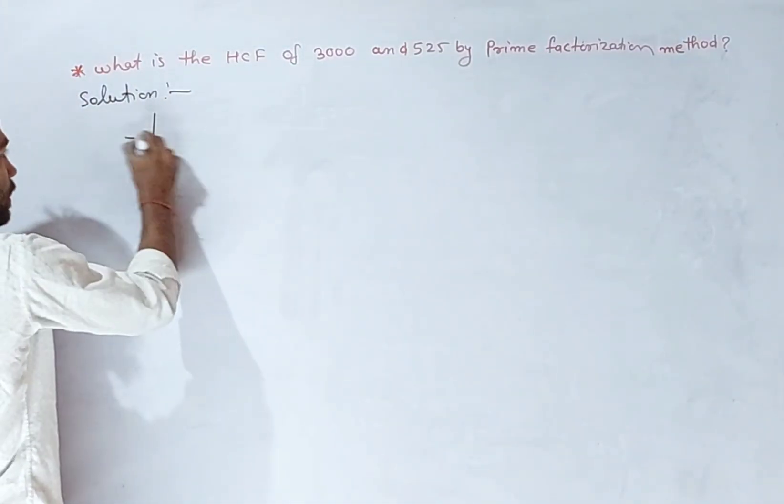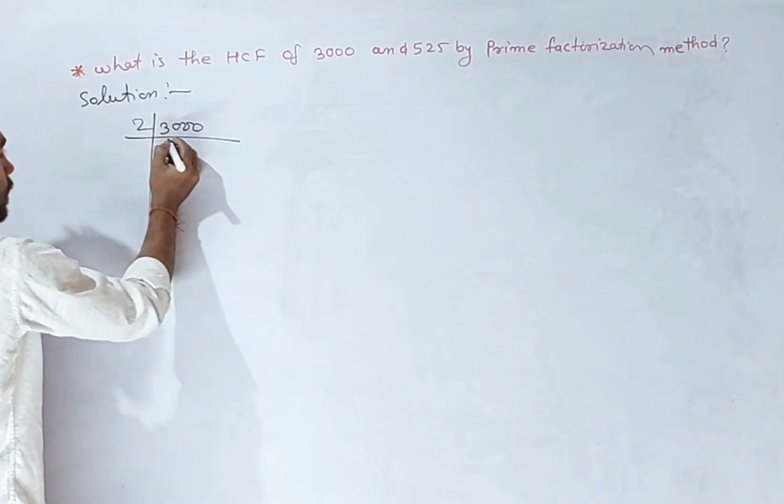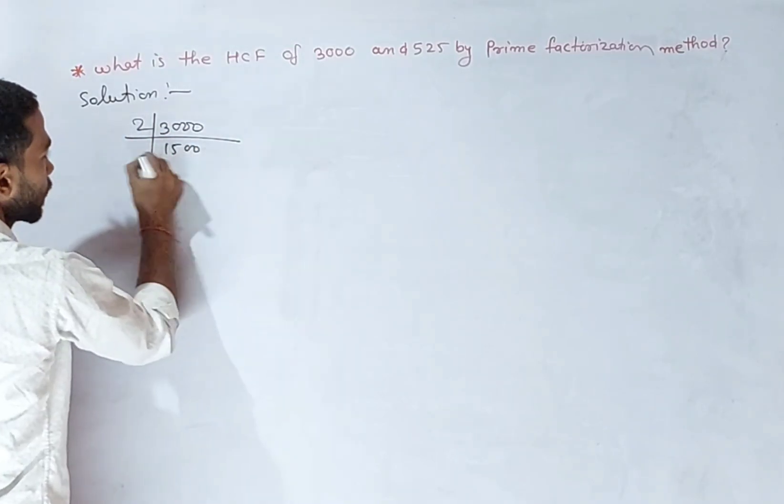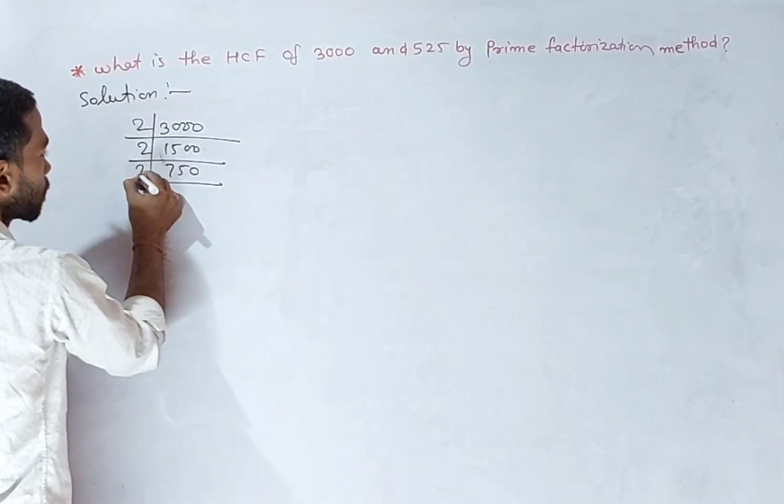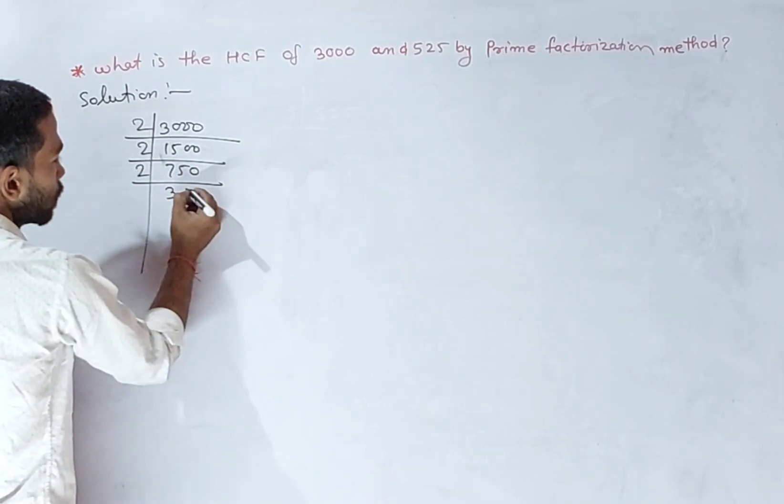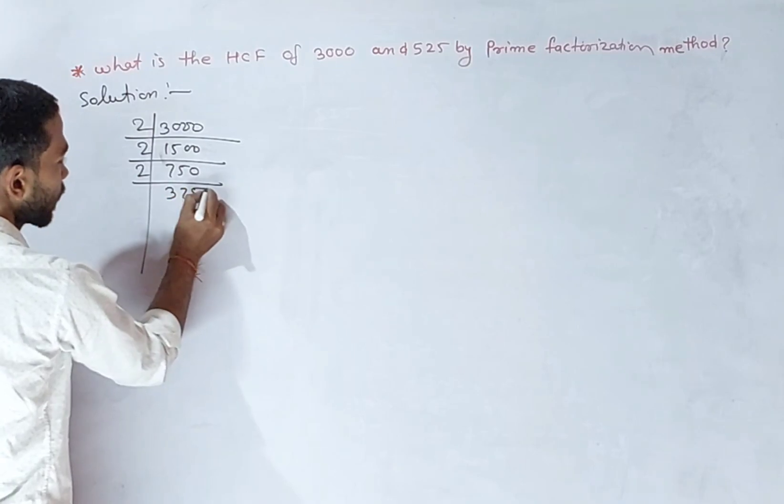First of all, prime factorization of 3000: divided by 2, 1500; divided by 2, 750; divided by 2, 375.